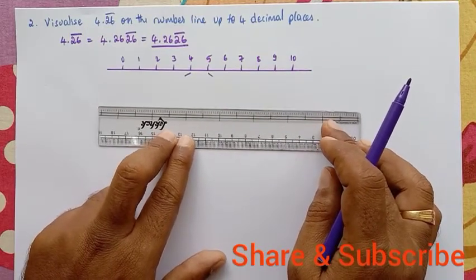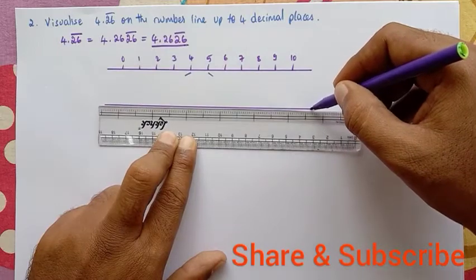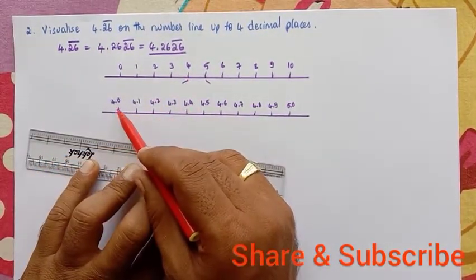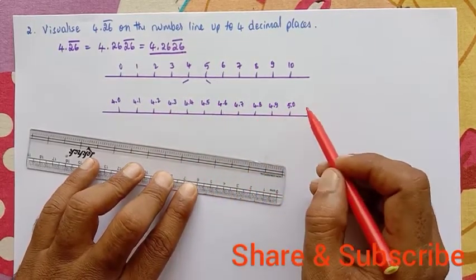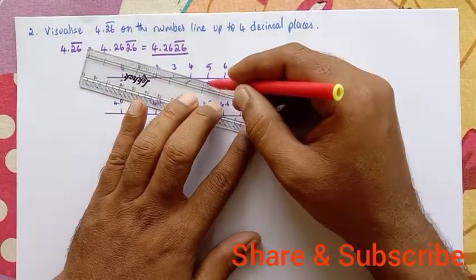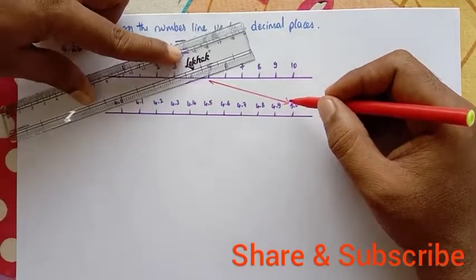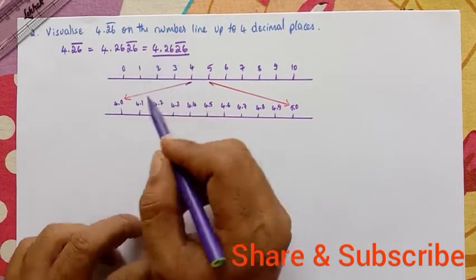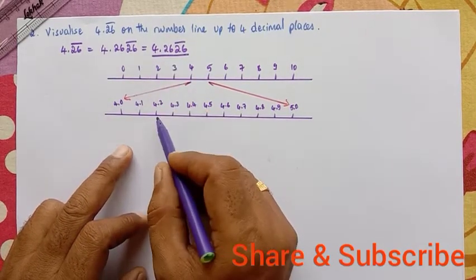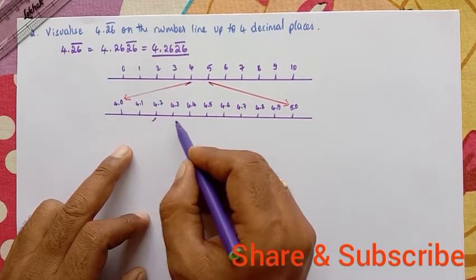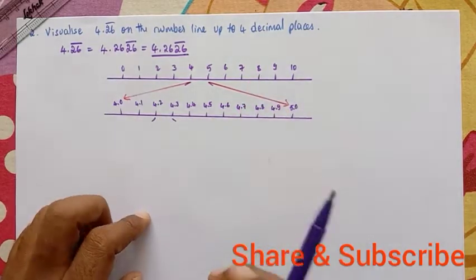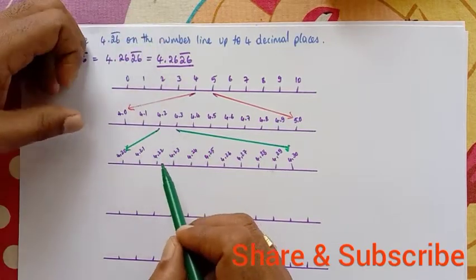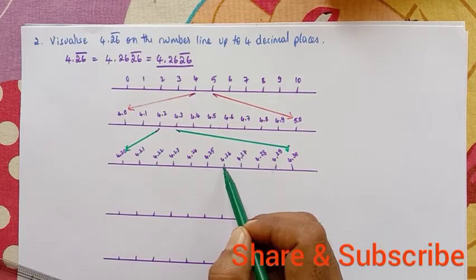We will be zooming this portion. As it has been zoomed, we can see 4.0, 4.1, 4.2, 4.3, and so on up to 5.0. This is the ending part and the starting point of this portion. The next part is 4.26. Where is 4.2? — 4.2 is here, and 6 comes only after this, in between these two points. So we will be zooming this part of the number line. Where it is 4.26? It is here — 4.26.